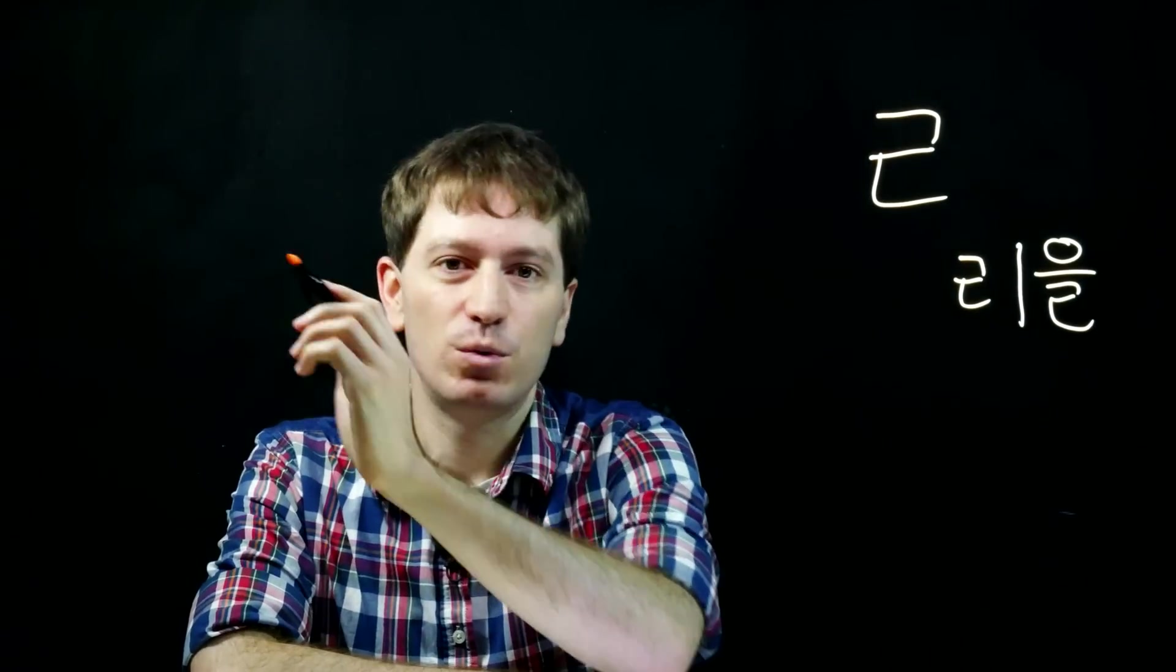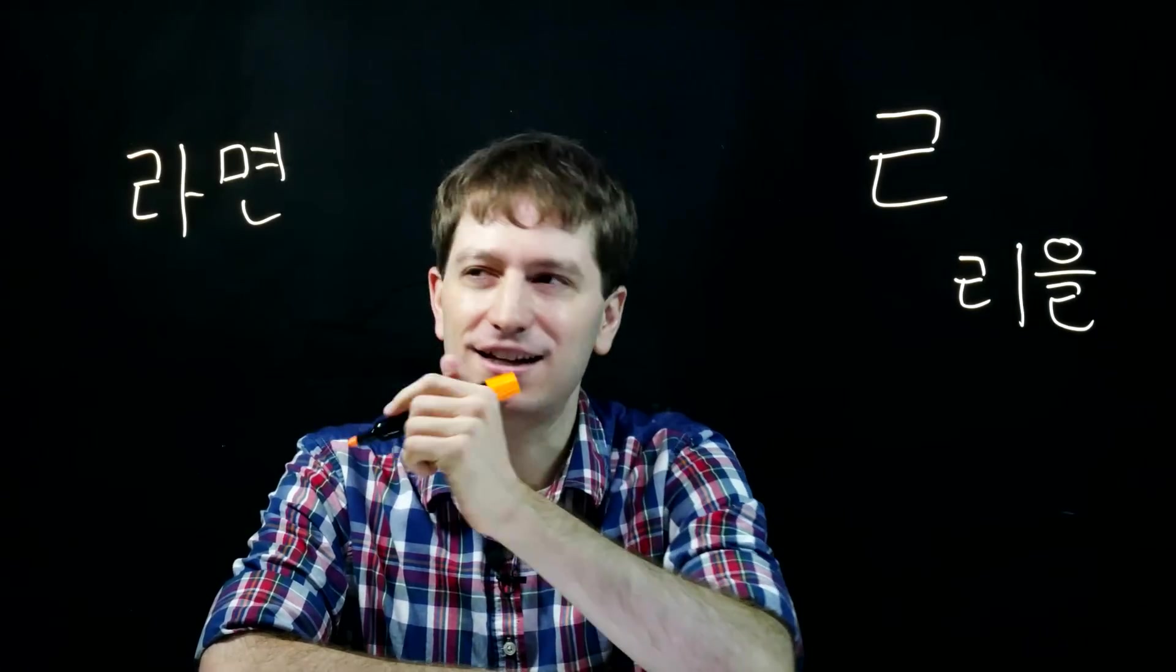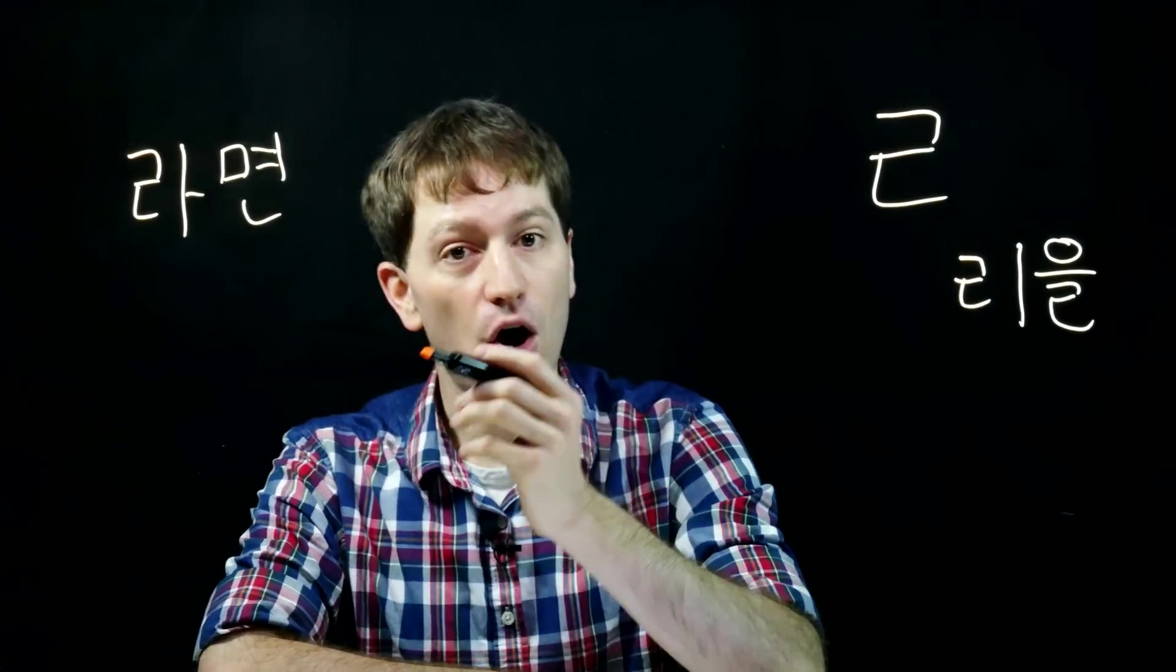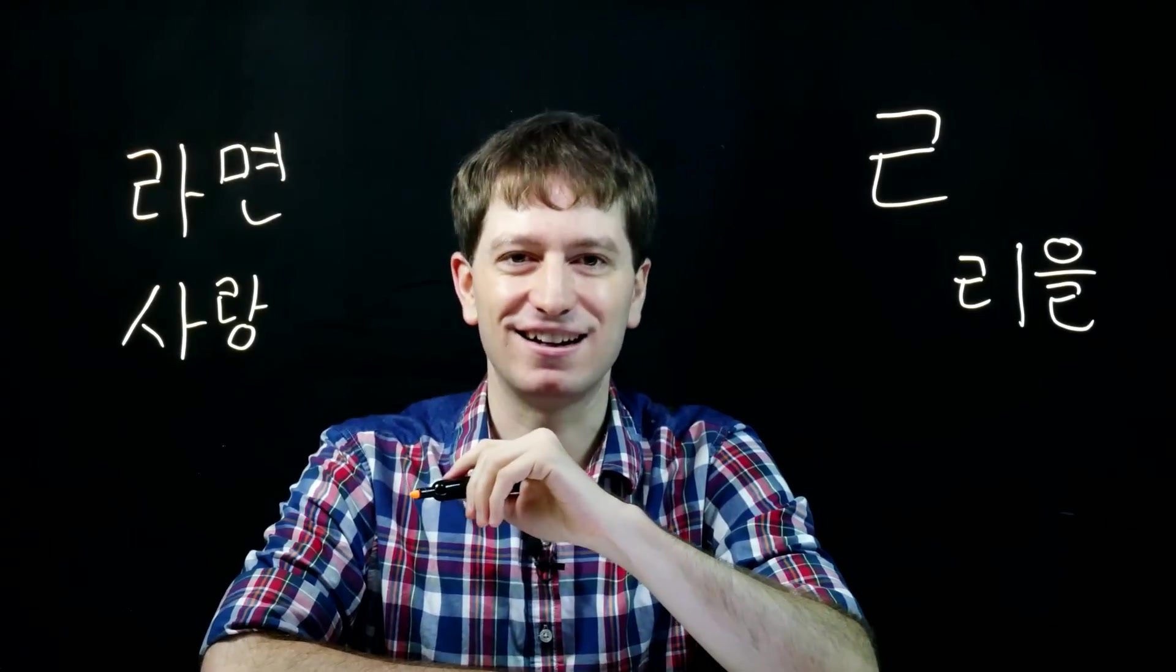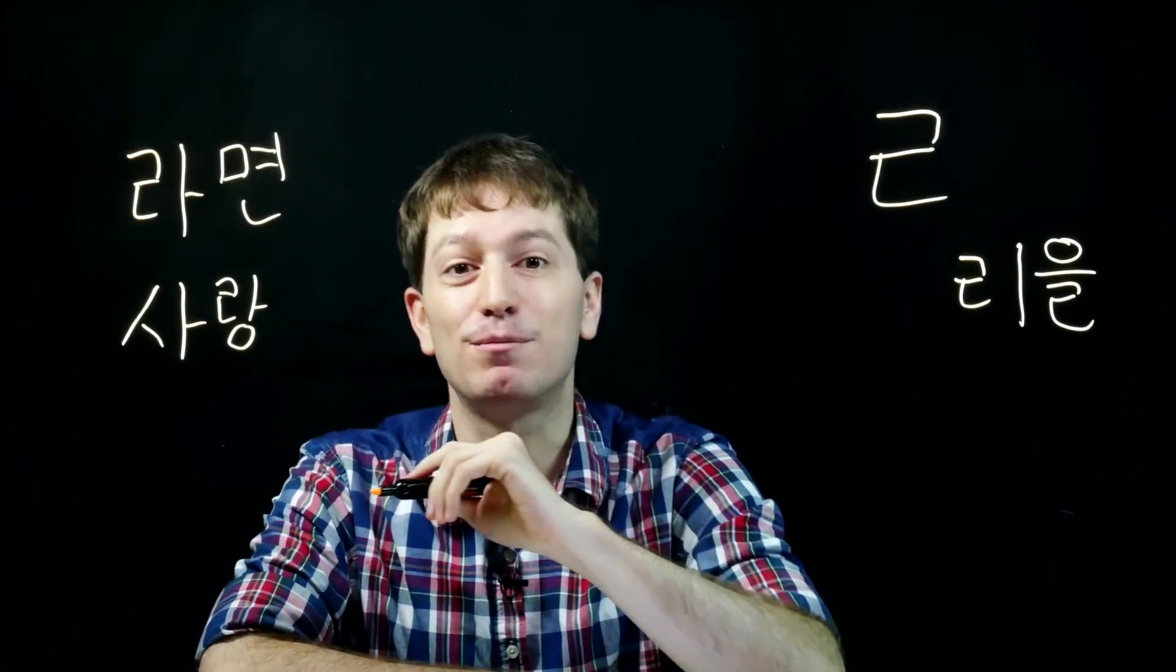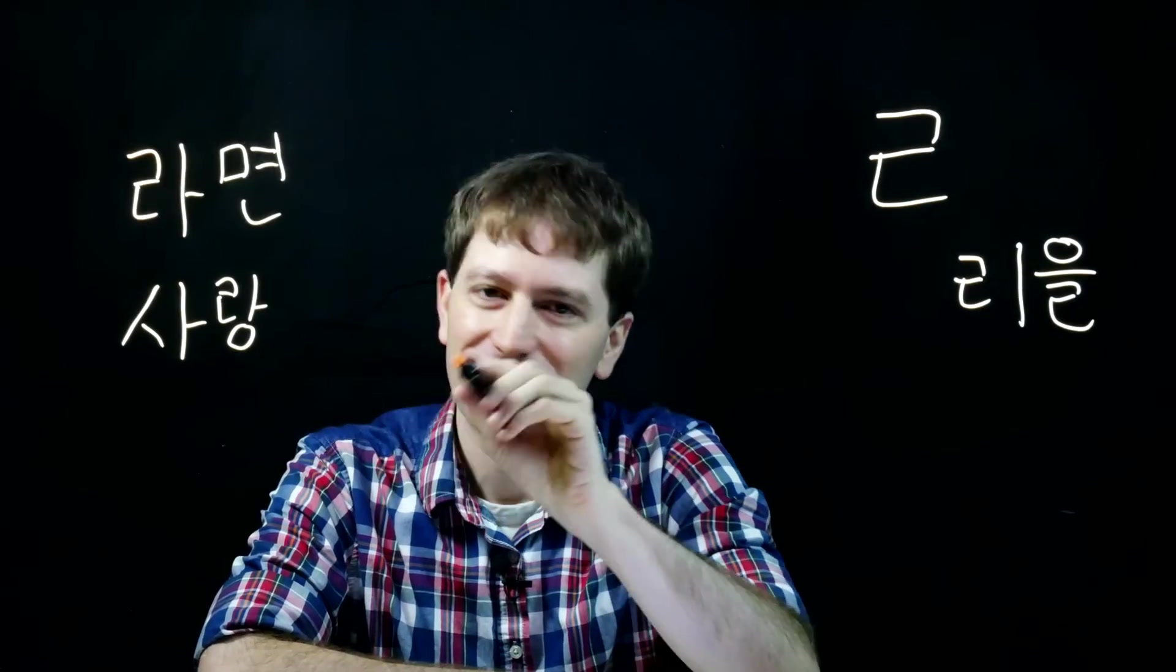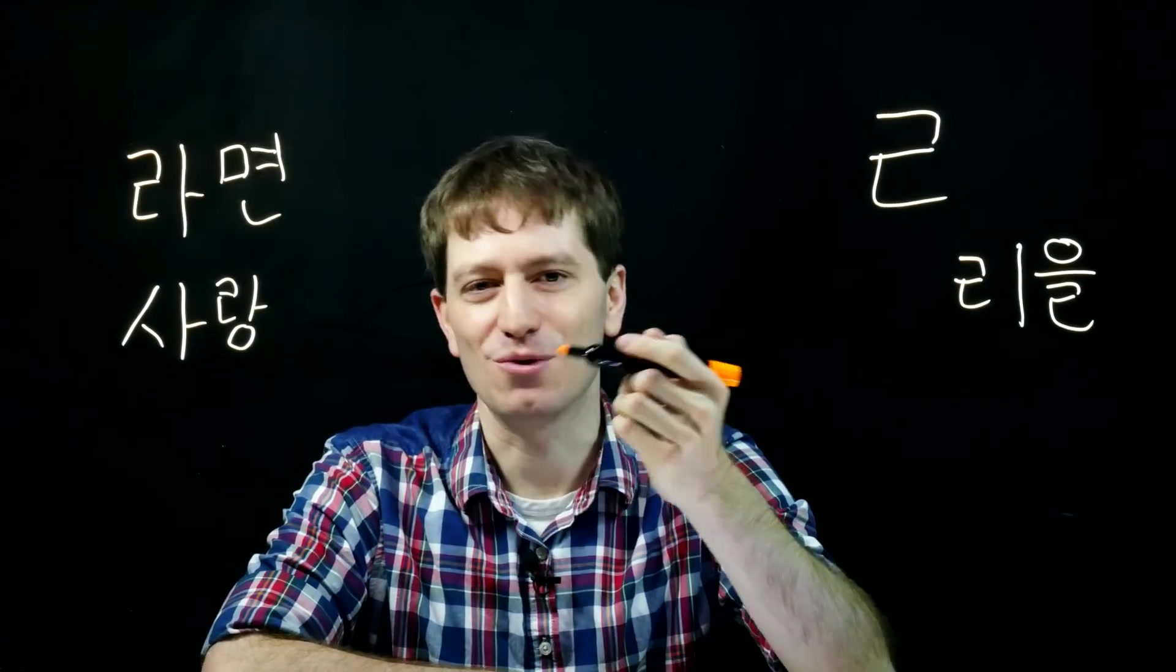So we might have a word, for example, like 라면, ramen in English. And for people who write this, they might think it sounds more like an R. Or we can have another word like 사랑, for love. And here people might think it sounds more like an L. So they would write 사랑 in English for this one or 라면 in English for this one.